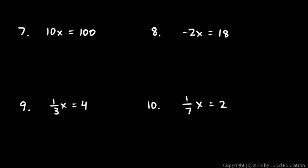Number 7: 10x equals 100, so I divide both sides by 10. Those 10s cancel out, and I'm left with x equal to 100 divided by 10, which is 10.